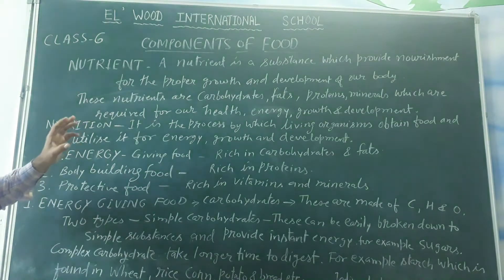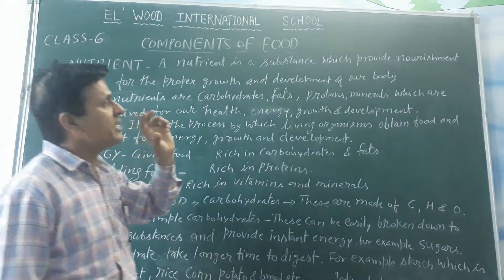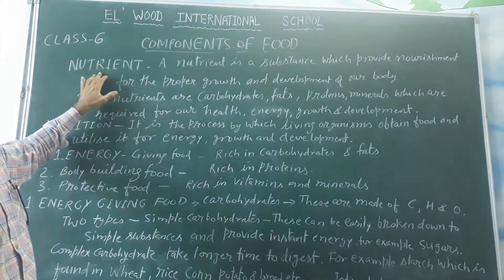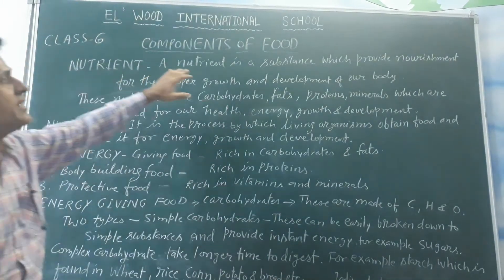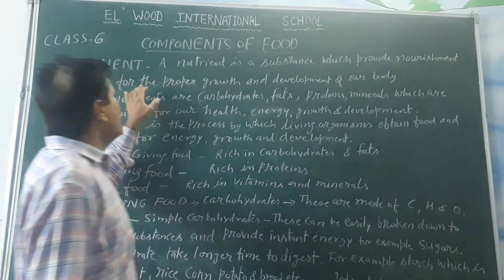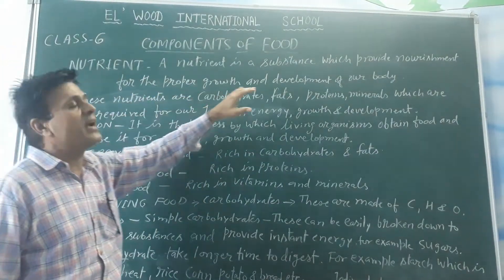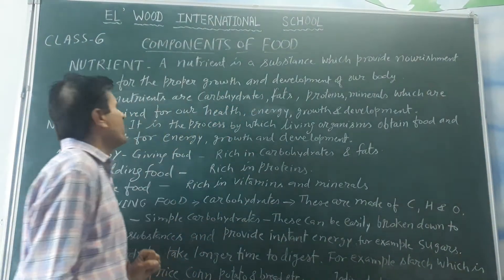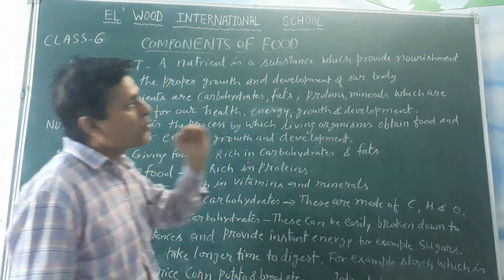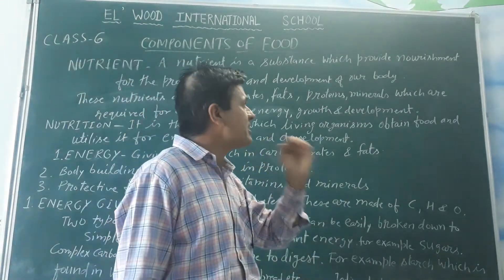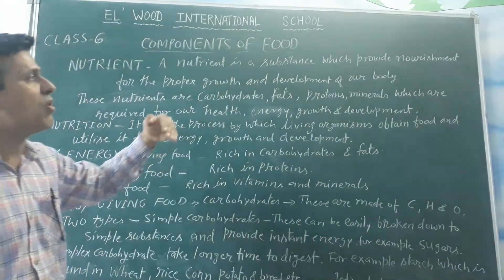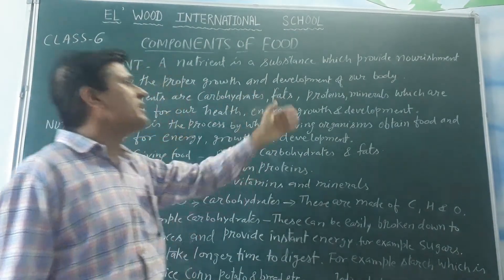The food we eat has some special essential components which are called nutrients. A nutrient is a substance which provides nourishment for the proper growth and development of our body. Nutrients are the substances that give our body proper nourishment so that our growth will be healthy and our body will develop.